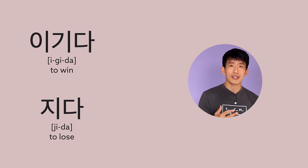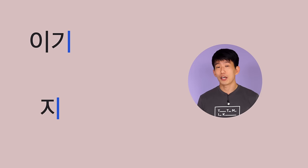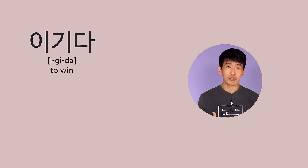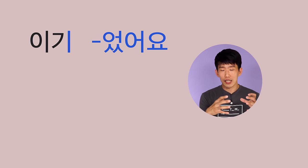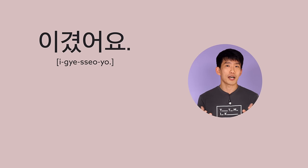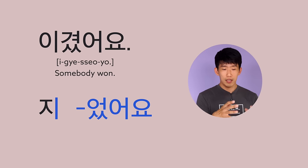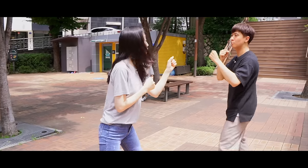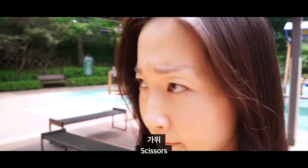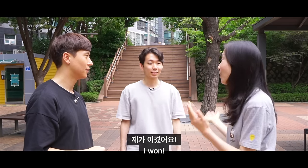With verbs like 이기다 and 지다 that do not end with 오 or 아 in the verb stem, you add 었어요. 이기다 means 'to win' — 이기 is the verb stem — so together it becomes 이겼어요, meaning 'I won' or 'they won.' And 지다, which means 'to lose,' is conjugated the same way to become 졌어요. 가위 바위 보! 누가 이겼어요? 제가 이겼어요! 또 졌어요!